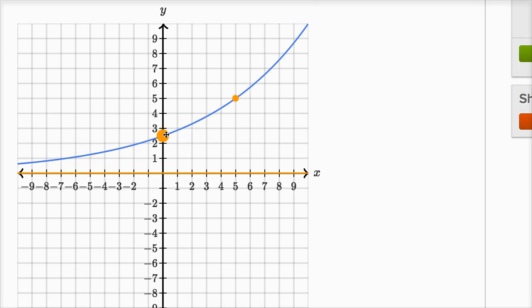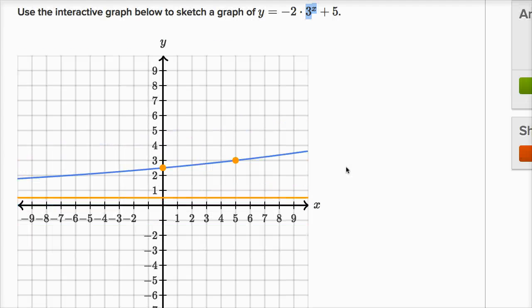We can move this point - it doesn't even just have to be the y-intercept, although that's a convenient thing to figure out. We can move this point here, and we can move the asymptote. Maybe the asymptote's the first interesting thing.